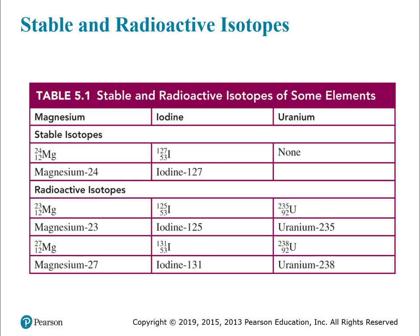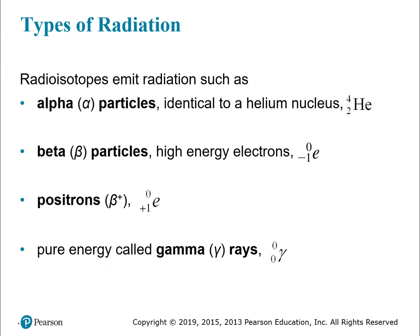Here are some examples of stable and radioactive isotopes. Magnesium has a couple of radioactive isotopes, iodine also has some, and uranium doesn't have any stable isotopes but has several radioactive ones. The types of radiation we'll cover in this class are alpha particles, beta particles, positrons, and gamma rays.